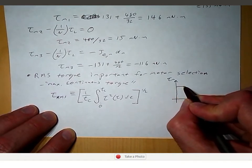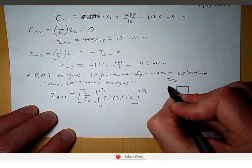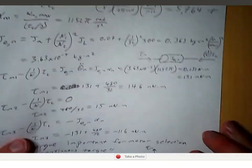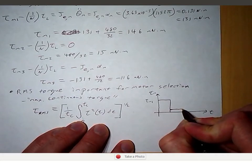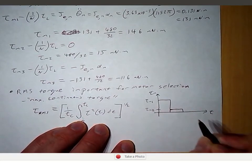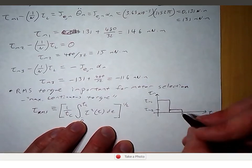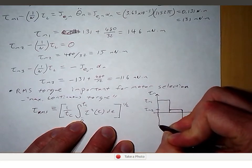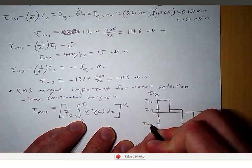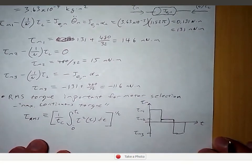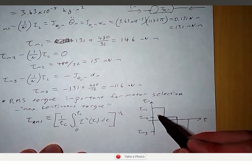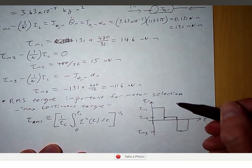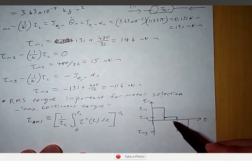Let me show what the torque does during our trajectory. In the first part, we have tau_M1 which was 146 mNm. Then we have tau_M2 in the second part, which was 15 mNm. And finally tau_M3 in the third portion, which was negative 116 mNm. To find the RMS torque, we square these torques to draw a new curve, then find the area under that squared-torque curve — one rectangle per trajectory segment.